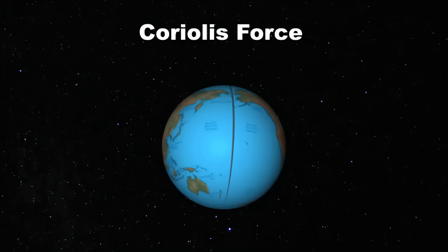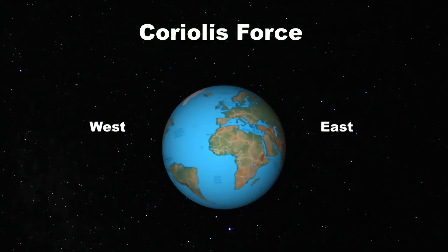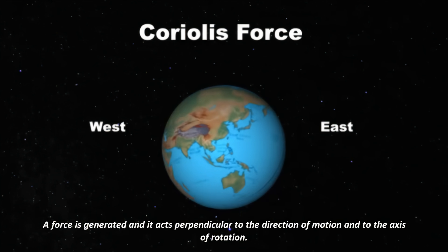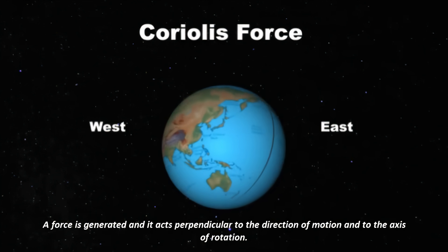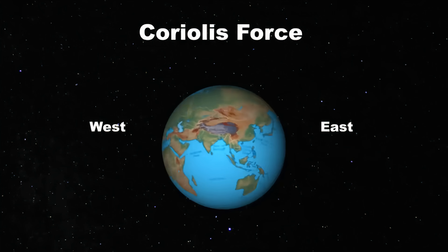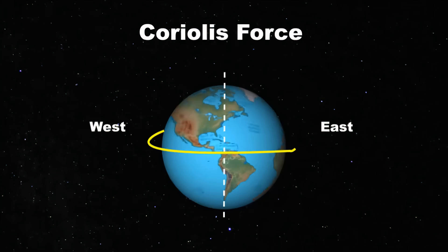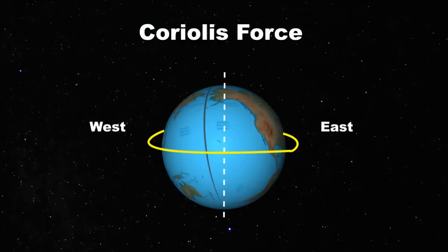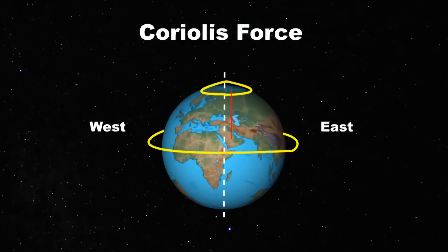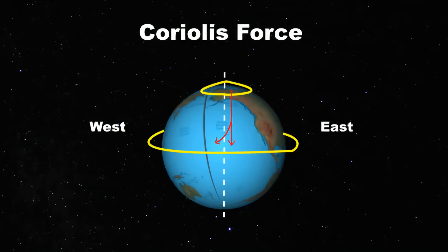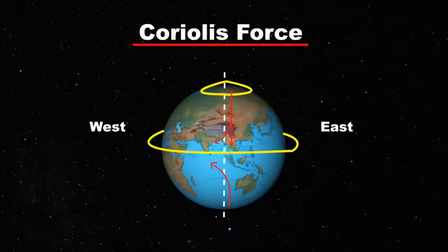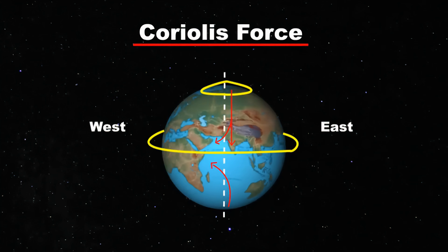Due to the rotation of the earth — the earth rotates towards the east, and that's why the sun, moon, planets and stars all rise in the east and go towards the west. Due to this rotation, a force is generated that acts perpendicular to the direction of motion and to the axis of rotation. In simple terms, when the earth spins on its axis from west to east, and since the earth is a sphere and much wider in the middle, the speed of the surface at the equator is much faster than at the poles. So if anything travels straight from the poles towards the equator, it gets deflected to the right in the northern hemisphere and to the left in the southern hemisphere. This is called Coriolis force, and it causes fluids like water and air to curve as they travel across or above the earth's surface.